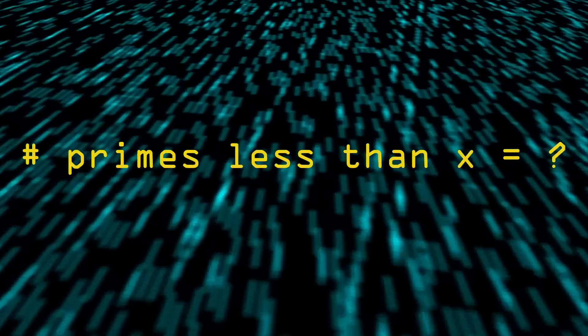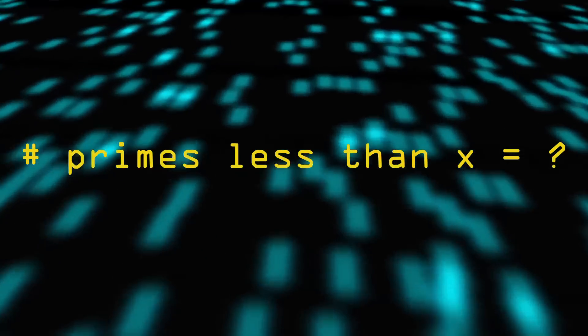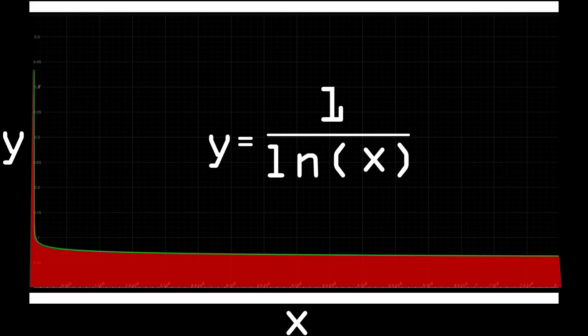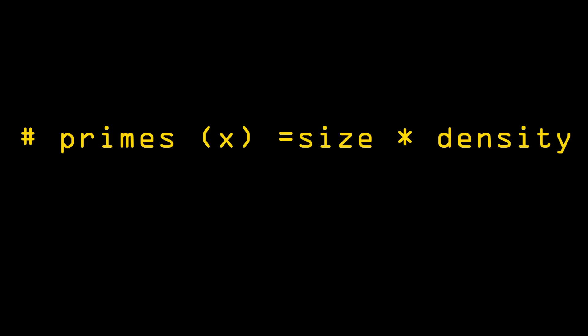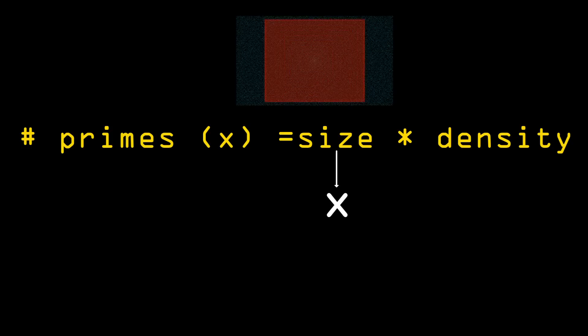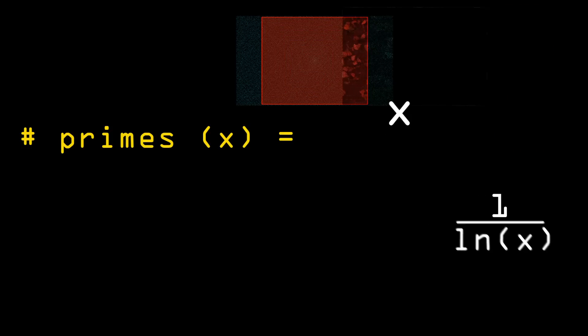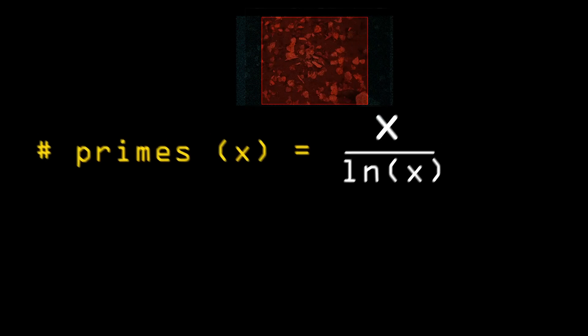Realize now that we can use this formula for prime density to estimate the number of primes up to x. The number of primes is the area under the density curve which we can simplify by assuming density is constant. So number of primes equals size times density or x divided by ln(x). This is the prime number theorem.